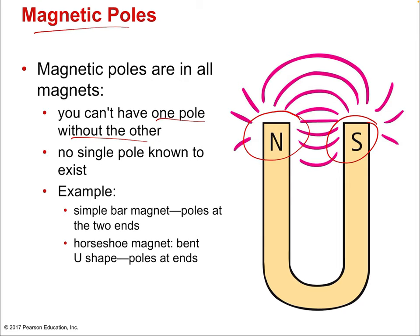Since no single magnetic poles are known to exist — and note that some branches of theoretical physics propose they might exist but they've never been discovered — for examples: a bar magnet has two ends, those are the two poles. A horseshoe magnet, which is basically a bar magnet bent into a U shape, also has two poles. The field lines of the magnetic field point from one pole to another, just like the field lines of an electric field point from one charge to another.